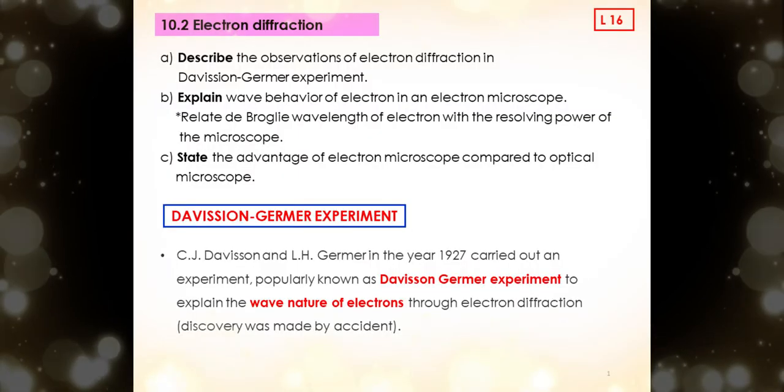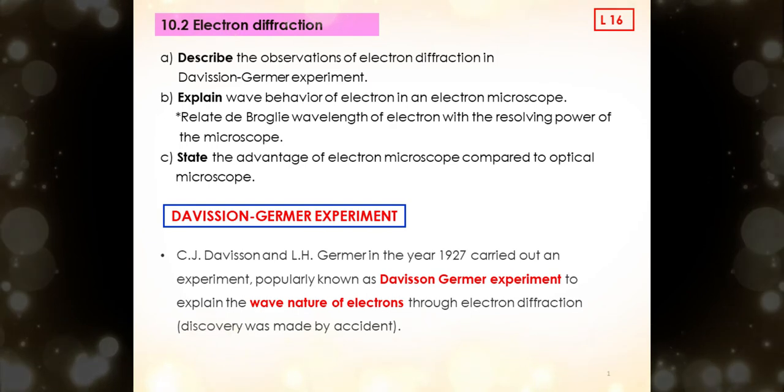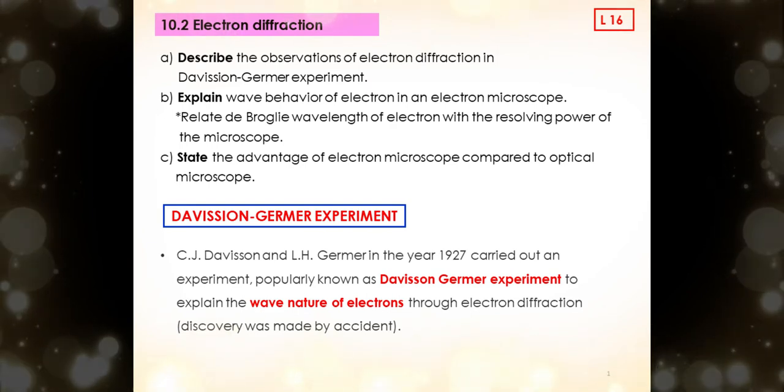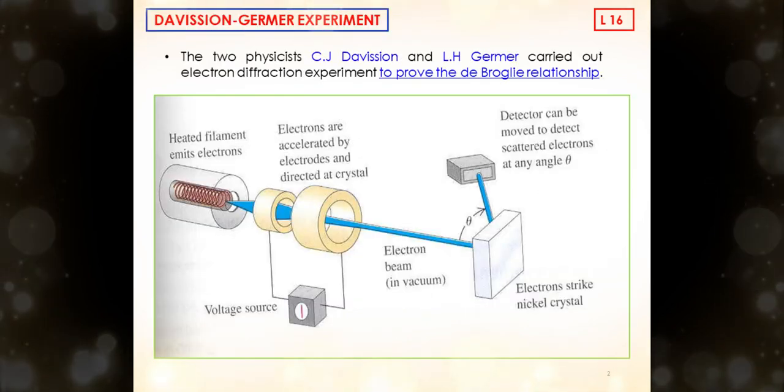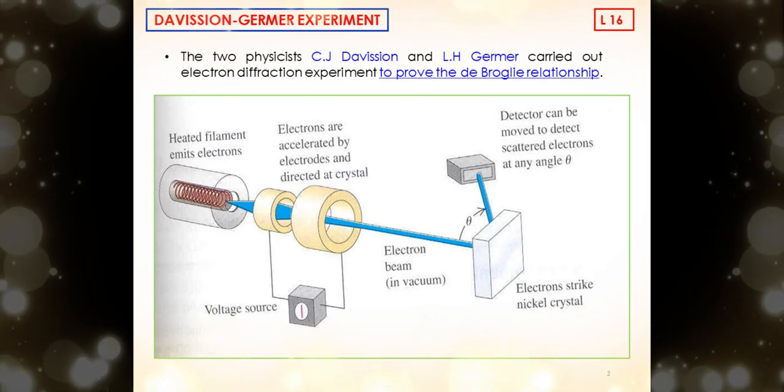Now we are going to focus on subtopic 10.2, that is electron diffraction. C. J. Davisson and L. H. Germer, in the year 1927, carried out an experiment popularly known as Davisson-Germer experiment to explain the wave nature of electrons through electron diffraction, which the discovery was actually made by accident. The two physicists carried out electron diffraction experiment to prove the de Broglie relationship.